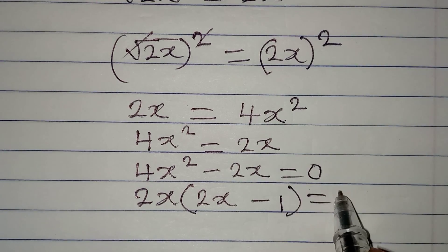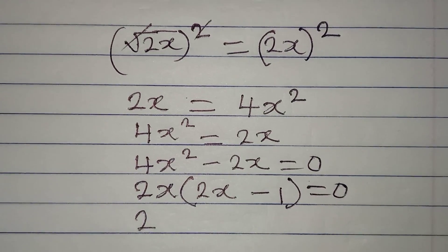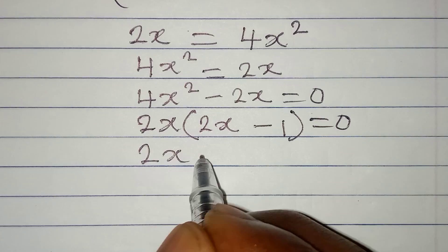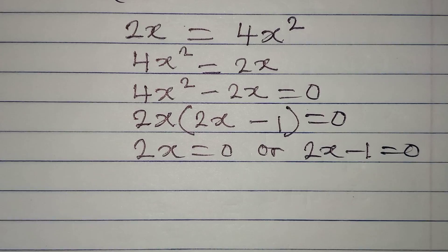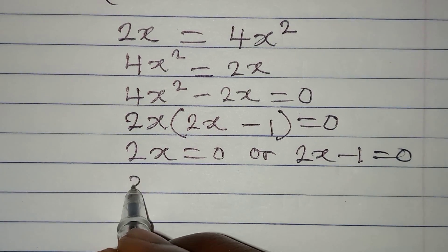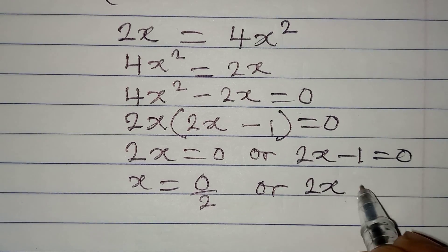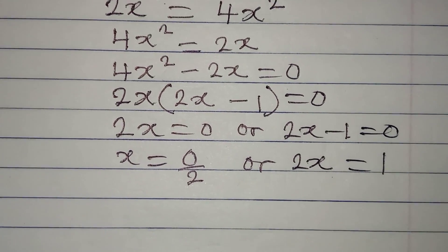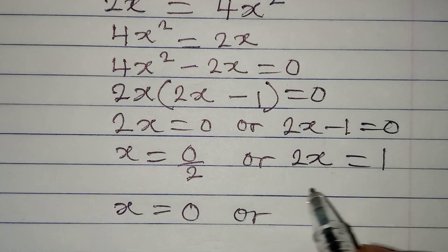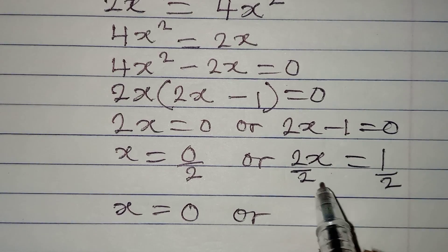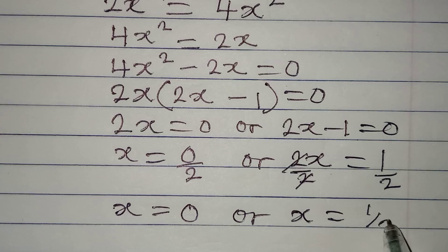From here we apply zero product property, meaning that 2x is equal to 0 or 2x minus 1 is equal to 0. From here our x is equal to 0 over 2, or from this 2x minus 1 equals 0, so x equals 1. Then x here is equal to 0 over 2 will give 0, or on this side we can divide by 2 and divide by 2. This cancels, meaning that x is equal to 1 over 2.